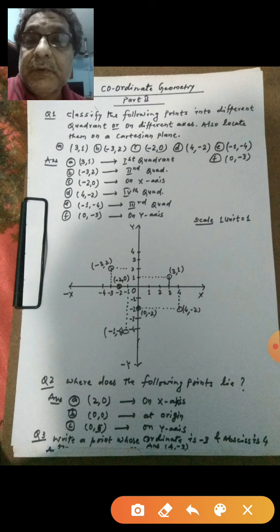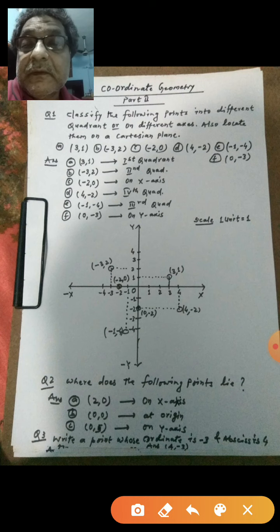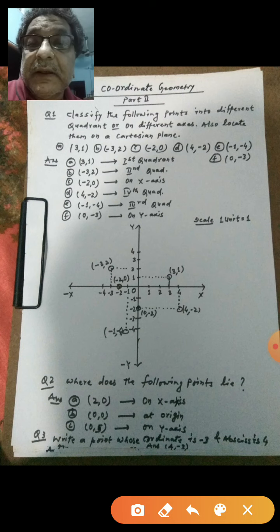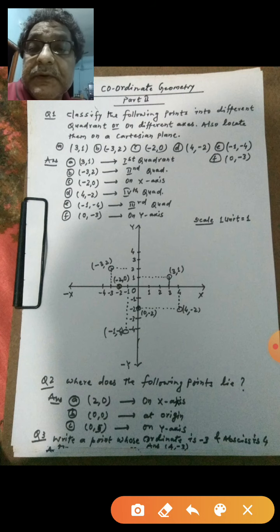So you have gone through already, so this point belongs to first quadrant. Very good. Next is minus 3 comma 2. So according to concept, x value is negative whereas y is positive, so recall the quadrant concept then answer comes second quadrant. Third one point is minus 2 comma 0.